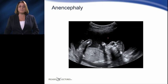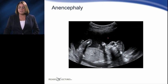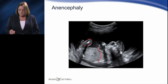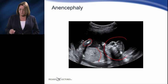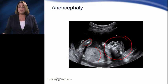Anencephaly is another lethal congenital fetal brain disorder where, in addition to no skull, there is no brain tissue. In this image, we see part of a fetal femur, part of the diaphragm, and some of the fetal facial features such as the orbits, but we're not seeing the skull and we're not seeing the brain. Therefore, this image demonstrates anencephaly.